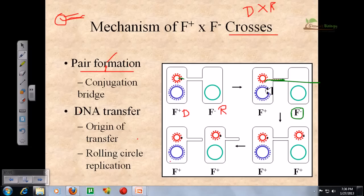So as a result, after the end of this conjugation, what we end up with is both F plus type of plasmid containing cells. So at the beginning we are F plus and F minus, right after the transfer we end up with F plus and F plus.